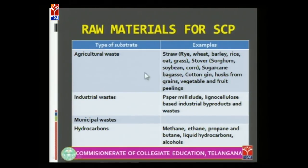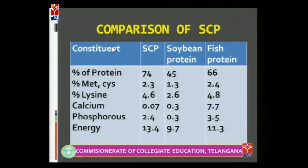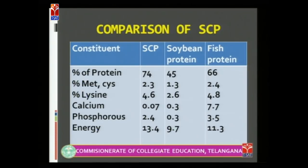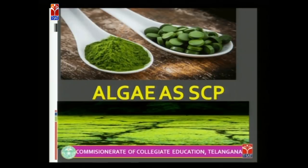Different raw materials can be used for SCP production, including agricultural waste, industrial waste, municipal waste, and hydrocarbons. A comparison of single cell protein with soybean protein and fish protein — both considered high protein sources — shows that SCP has 74% protein compared to 45% in soybean and 66% in fish protein. When comparing other factors such as methionine, cysteine, lysine, and calcium, SCP is superior to both soybean protein and fish protein.